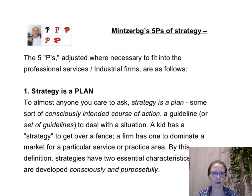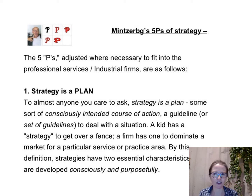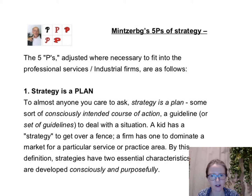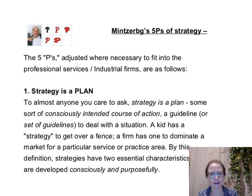Mintzberg's five P's of strategy are as follows. First, strategy is a plan: a consciously intended course of action, some guideline or set of guidelines to deal with a situation. A child has a strategy to get over a fence; a firm has one to dominate a market for a particular service or practice area. By this definition, strategies have two essential characteristics: they are developed consciously and purposefully.